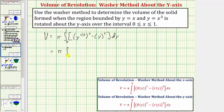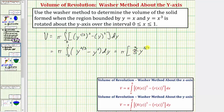We have pi times the integral from zero to one of y to the two-thirds minus y squared. Finding the antiderivative: the antiderivative of y to the two-thirds is y to the five-thirds divided by five-thirds, or three-fifths times y to the five-thirds — we get the five-thirds exponent by adding one to two-thirds. Then we have minus y cubed divided by three, or minus one-third times y cubed.